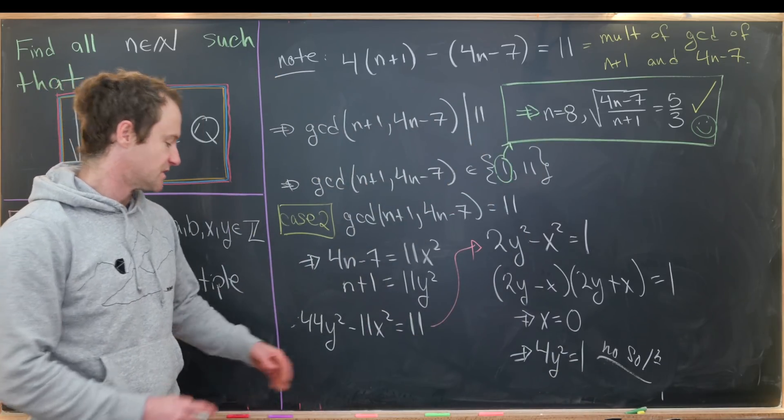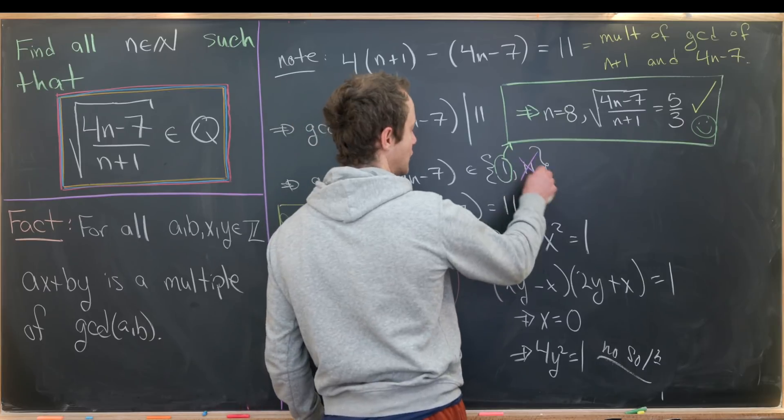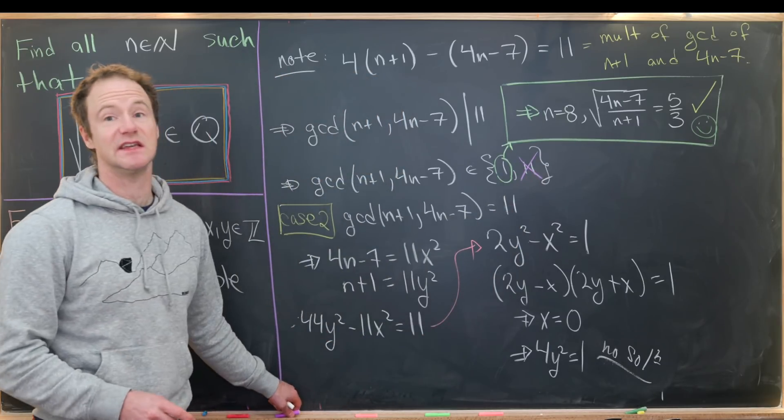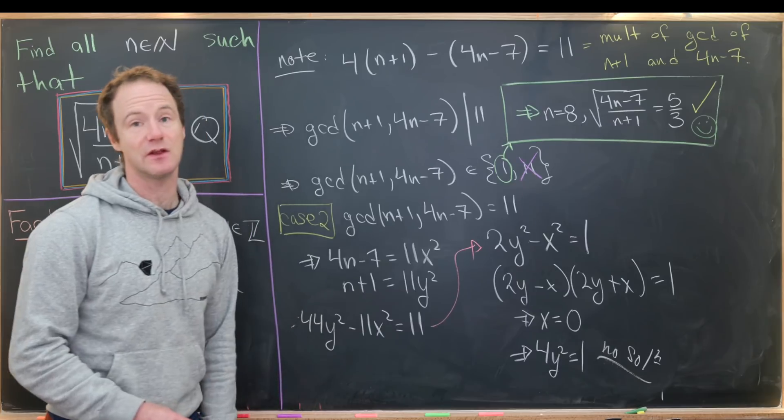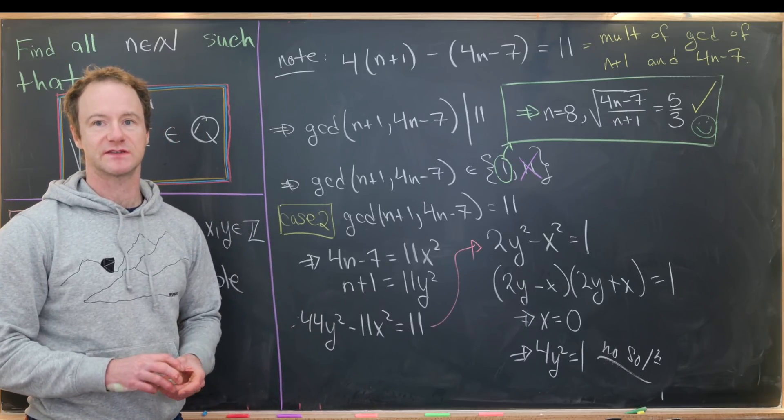So that tells us that in the end we have no solution in this gcd = 11 case, which means our only solution was the n = 8 case that we saw before. And that's a good place to stop.